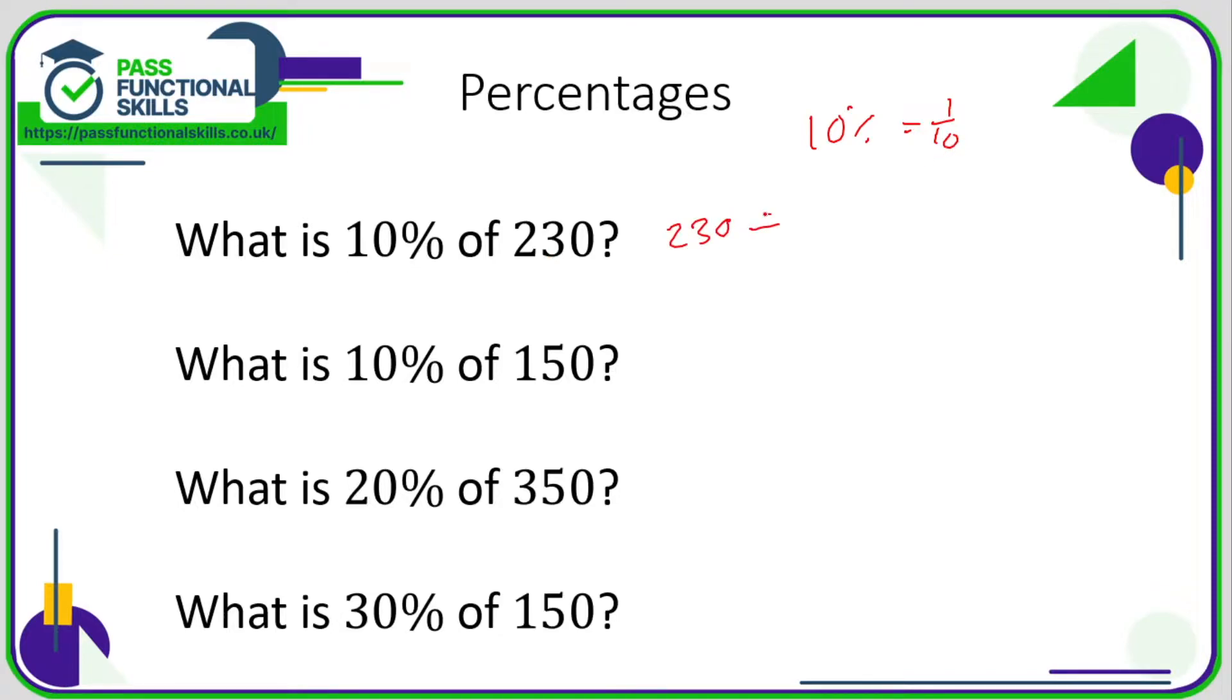So 230 divided by 10. When you're dividing by 10 and the answer has a zero on the end, just chop off the zero: 23. So 10% of any amount ending in a zero is easy—just chop off the zero.